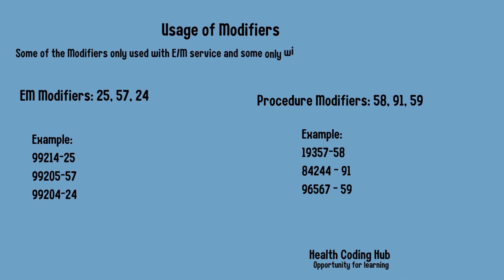Regarding the usage of modifiers: modifiers can be only alphabets or sometimes numbers. One important rule is that whenever we use modifiers, they will always be a suffix of the CPT procedure or E&M codes — meaning we assign the modifier after the CPT code.